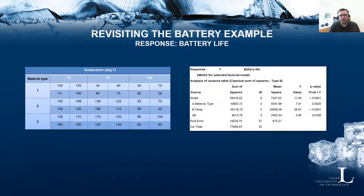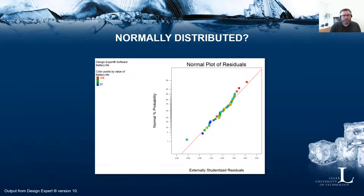I'll skip the model details for now because it's a bit more tricky when you have three levels for each variable and one of the variables is also qualitative. But if you go into the software and look at the residuals, you will get plots — first, are the residuals normally distributed? Different software will give you different options for the residual plots. I'll show you four plots from the Design Expert software used in this course.